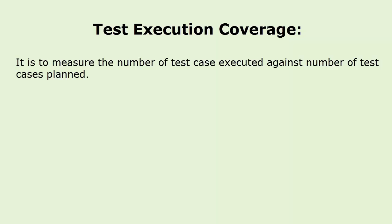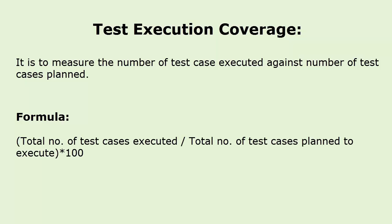Test execution coverage is used to measure the number of test cases executed against the number of test cases planned. The formula is: total number of test cases executed divided by total number of test cases planned to execute, multiplied by 100. Here goes an example on test execution coverage metrics.